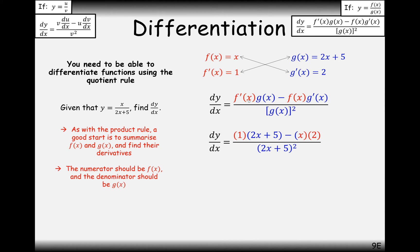So the f(x) differentiated is 1, the g(x) function is (2x + 5) — you've got to get this the right way around, otherwise your answer comes out as a negative version of what it should be. Then subtract the f function, which is x, multiplied by the g function differentiated, which is 2. Divide the whole thing by g(x) squared. Simplifying, we get 2x + 5 minus 2x — the 2x's cancel out and we're left with 5 over (2x + 5) squared.